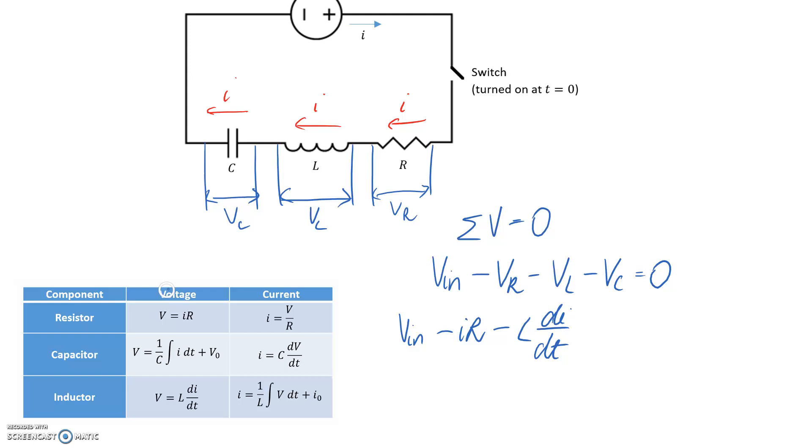Again, looking through our table, we want to write voltage in terms of current. So substituting this in, and this is plus V_0, and I'm going to bracket all of this off because all of this is V_C. And it's equal to the zero on the other side of the equation.